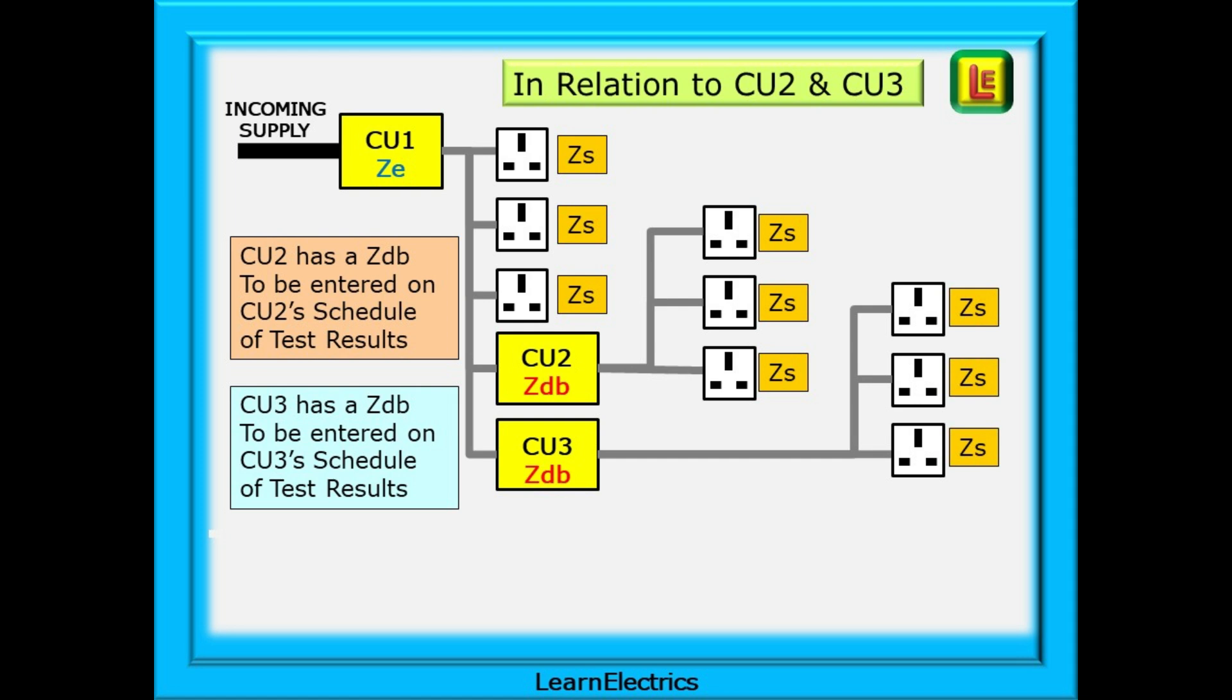Together with the ZDB, this will make the ZS for each socket circuit entered under measured ZS. Just keep track of which paperwork you are entering the data on. Be methodical. If this is CU1's paperwork, we will record CU2 as a measured ZS. If it is CU2's paperwork, then the same number is now a ZDB at the top of the test results page.